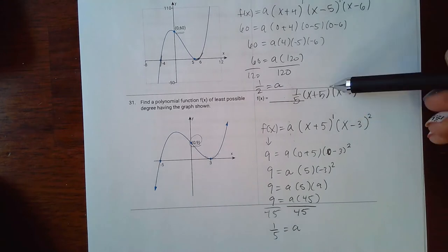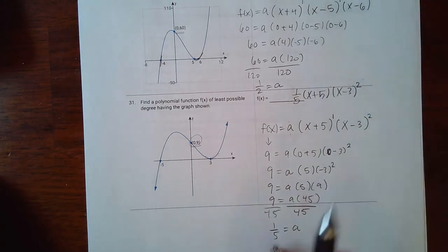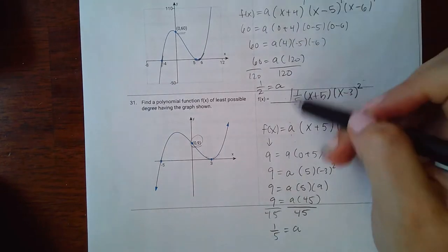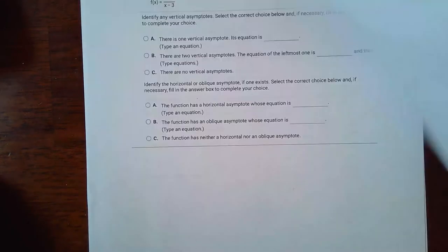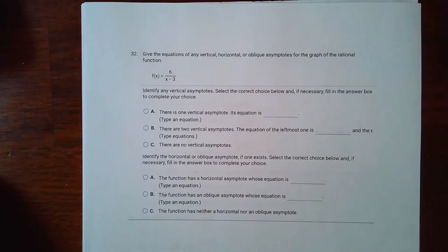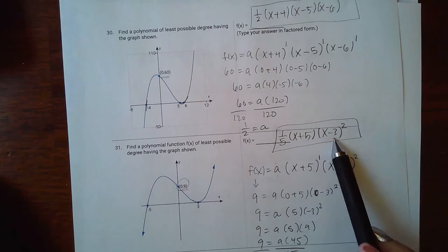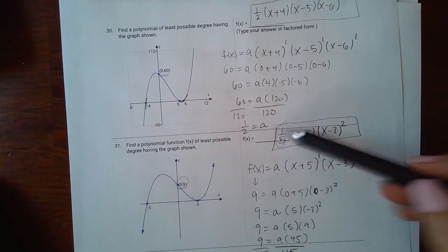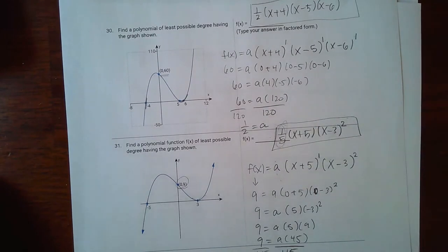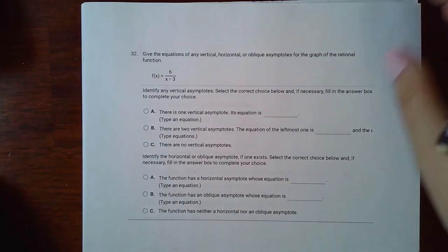When the exponent is 1 you don't have to write it, but if it's 2 or 3 you have to include it. This is the final answer. You do have to show work for this problem — especially you must show how you're coming up with the leading coefficient by doing the calculation to find that a value.